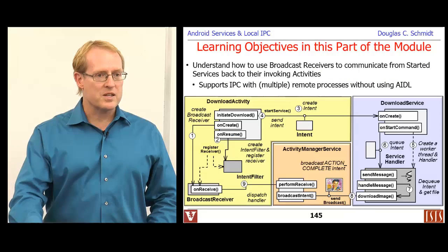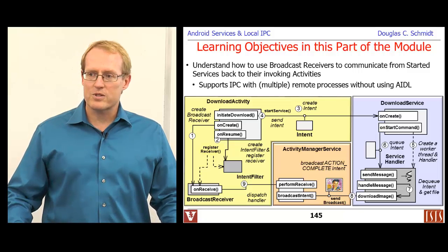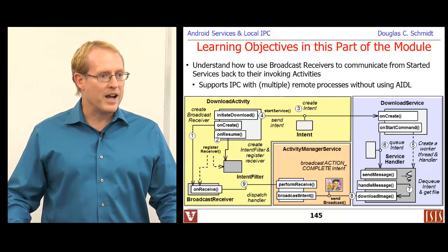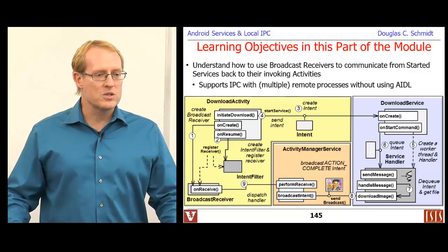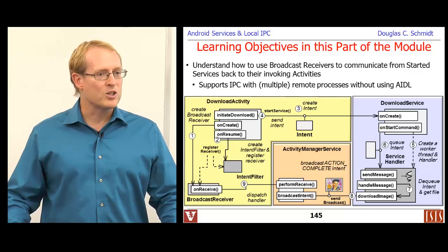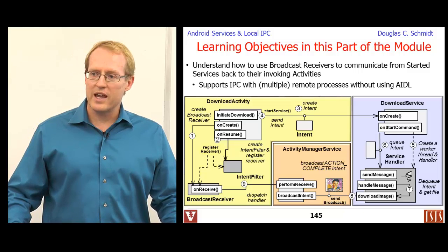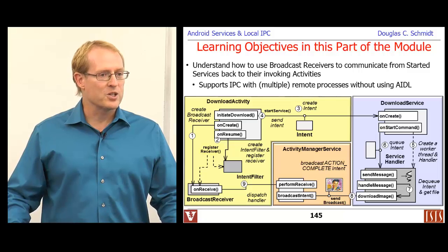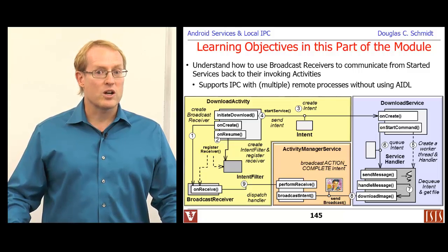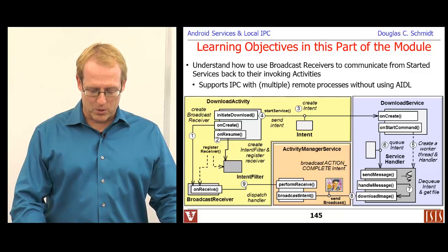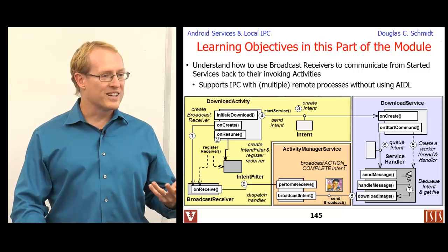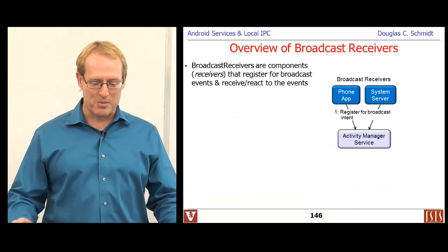The first purpose here is to discuss how we can use broadcast receivers to communicate back from a started service to the activity that invoked it. We can use broadcast receivers as a way of communicating with potentially multiple processes without having to use the Android Interface Definition Language, AIDL. We'll talk about AIDL later — it's a powerful mechanism — but we'll cover that at a later point. I'll go through this diagram one step at a time so you can see how all the pieces fit together.